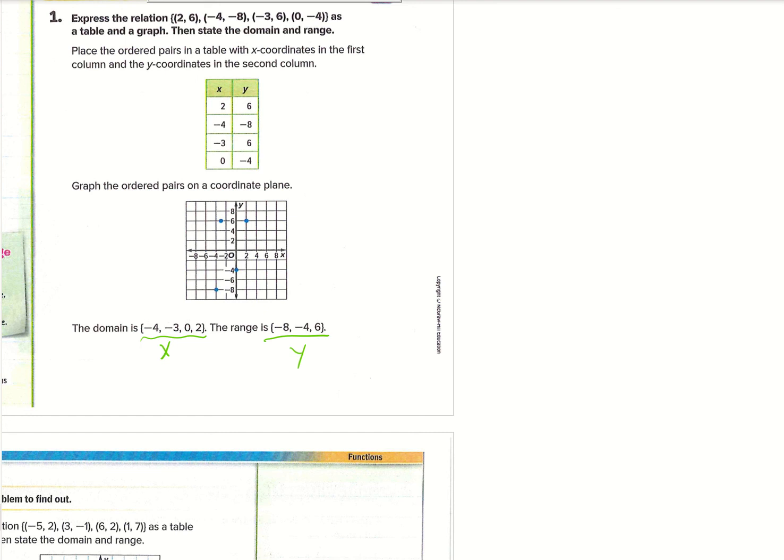And then the same thing for y, it goes negative 8, then negative 4, then 6. So it's not in the same order that they were up here or up here. They just put them in the order of least to greatest.